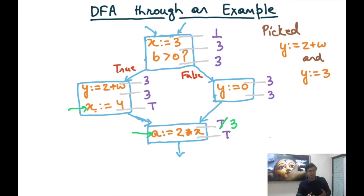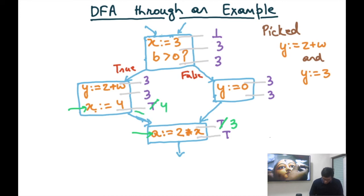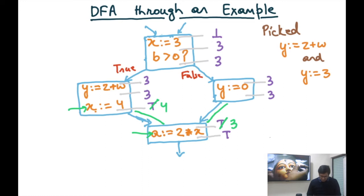The order in which we pick statements doesn't matter — the final answer will be the same. For example, if we first pick x:=4 and get out=4, then pick the in of a:=2*x, the two predecessor values flowing in are 4 and 3. Since c≠d, the merged value is bottom. Because a:=2*x does not modify x, the out also becomes bottom.